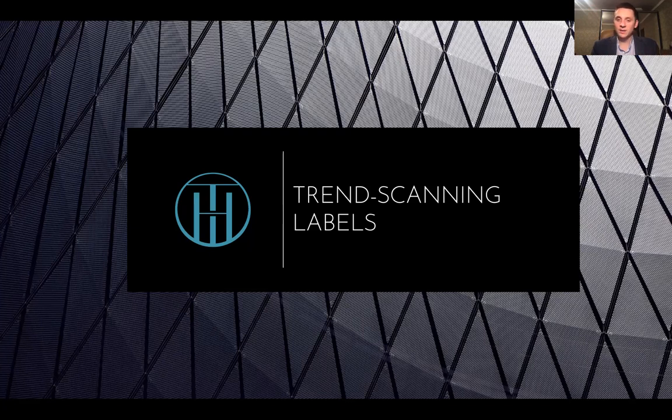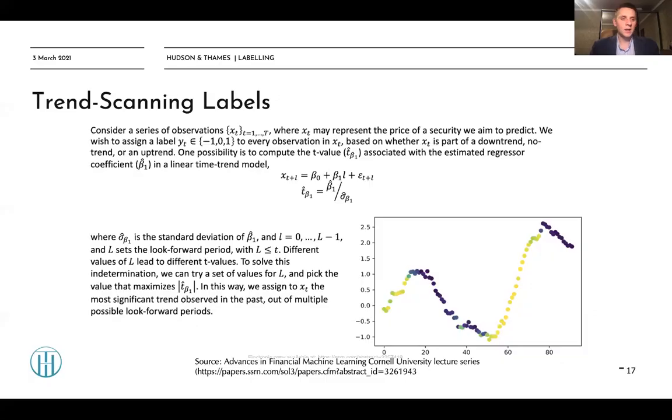Consider a series of observations x_t where x_t may represent the price of a security we aim to predict. We wish to assign a label y_t which may equal either minus one, zero, or one to every observation in x based on whether x_t is part of a downtrend, no trend, or uptrend.